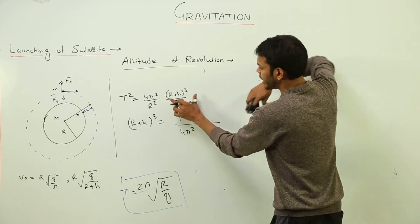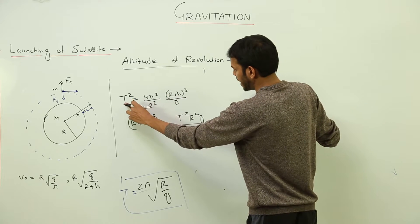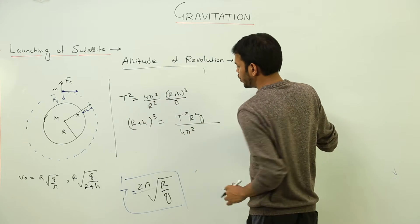So r plus h cube, we need to take only this thing. So r square g multiplies and 4 pi square goes into denominator side.